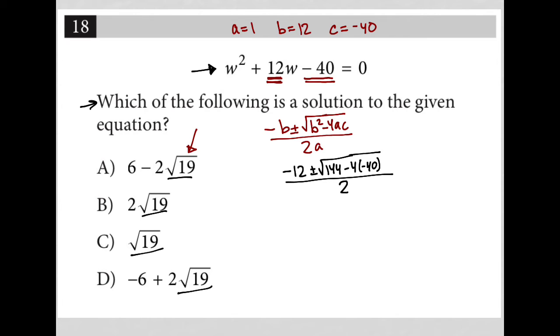Let's simplify this further. So I'd have negative 12 plus or minus the square root. So I have positive 144. And then negative 4 times negative 40. Well, that would be a positive 160.